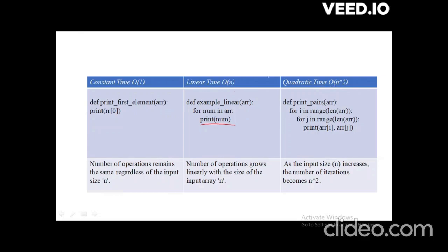Then comes quadratic time, where I want to print elements as pairs. If the array has one element, it prints: (1,1). If the array has two elements 1 and 2, it prints: (1,1), (1,2), (2,1), (2,2). The basic operation print is performed 4 times for input size 2. So you have a quadratic increase — when input doubles, operations increase fourfold.